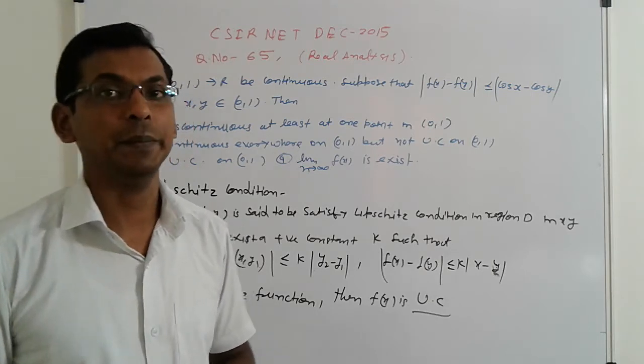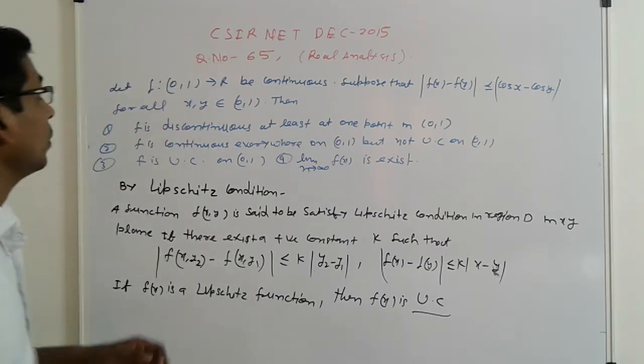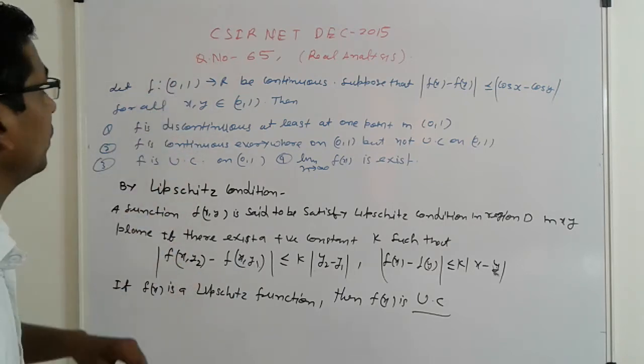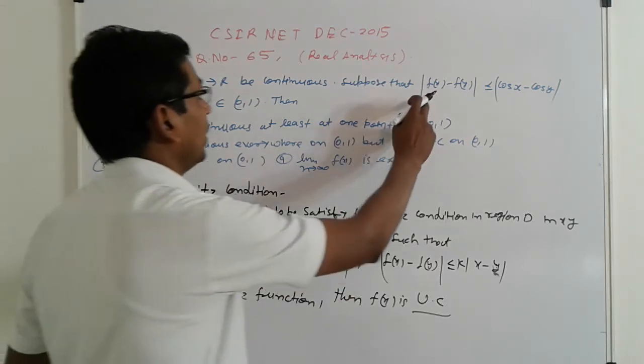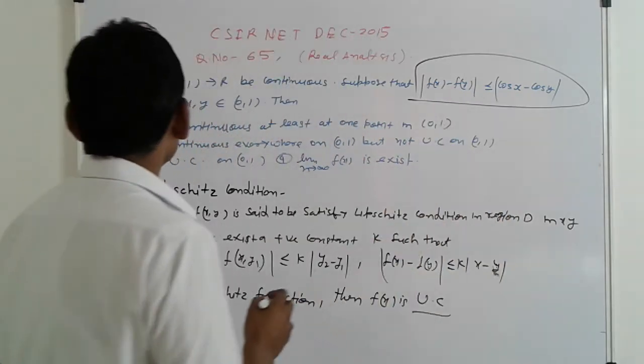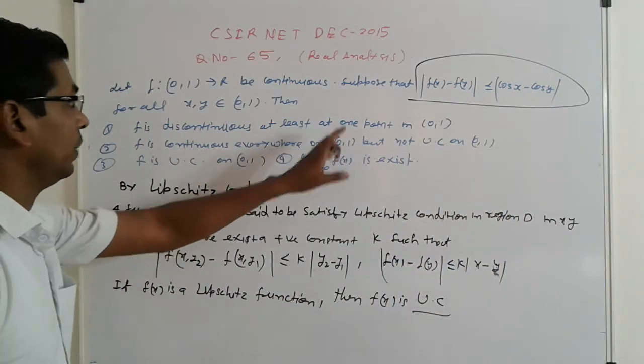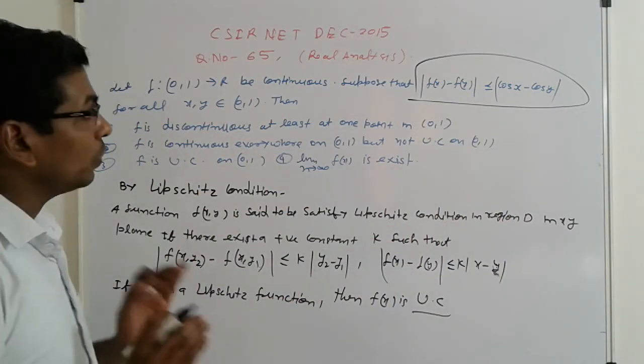Now come to the point, friends. Here, f is continuous. This is important - f is given on [0,1], and four options are given.